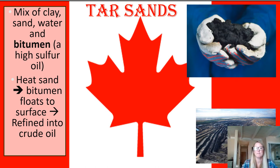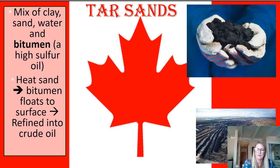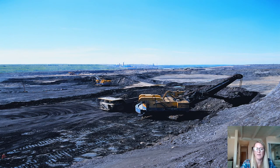There are also tar sands, which are big in the news because Canada has a lot of them, and we're looking at using this oil to meet energy demands in the United States. A tar sand is a mixture of clay, sand, water, and a high-sulfur oil called bitumen. Similar to shale oil, you take the tar sand, heat it, and the bitumen floats to the surface so you can extract it. It's very energy intensive, requires mining, and there is a lot of environmental destruction associated with it. Here's a picture of a tar sands operation in Canada — quite large, with lots of habitat destruction.